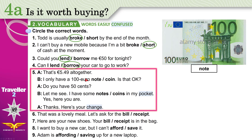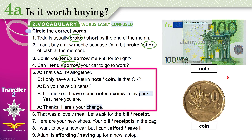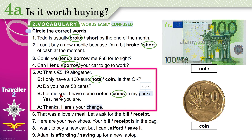Note and coin. A note is a piece of paper money — this is a 100 euro note. A coin is a round piece of metal used as money. That's 5.49 euros altogether. I only have a 100 euro note — is that okay? Do you have 50 cents? I have some coins in my pocket — pocket is where you keep your money in your pants or jacket. Here is your change — the remaining money. You gave me 100 euros and 50 cents; I give you 95 euros back.